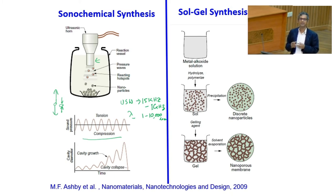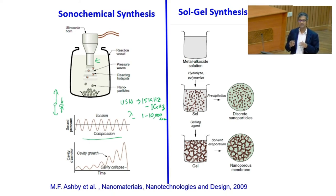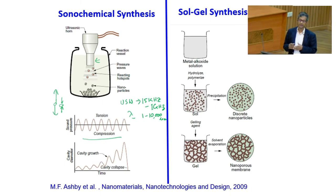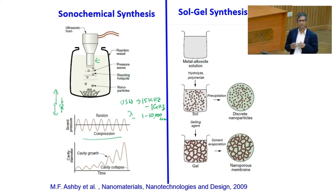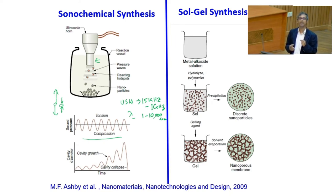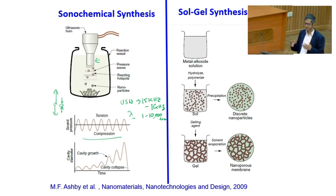Because the collapse happens in nanoseconds, the heat transfer from the bubble to the surrounding water is adiabatic — there is effectively no heat transfer at all. This leads to a huge increase in temperature: inside these bubbles, the reaction center temperature can reach 5,000 Kelvin, almost close to the temperature of the sun. The pressure can also be as high as 2,000 atmospheres.